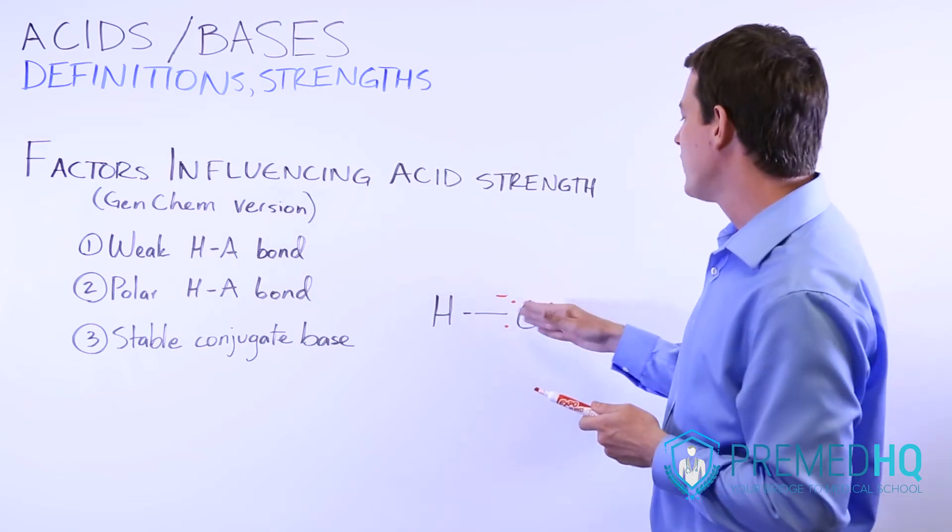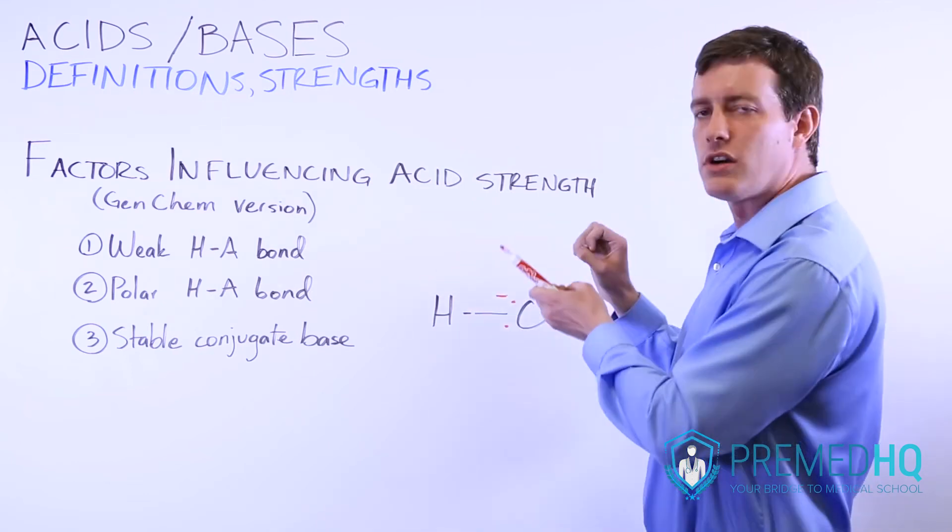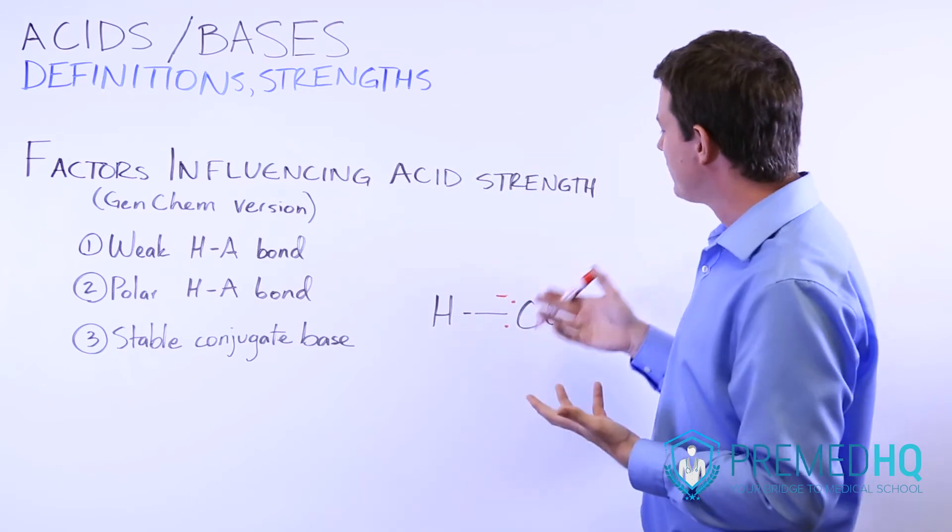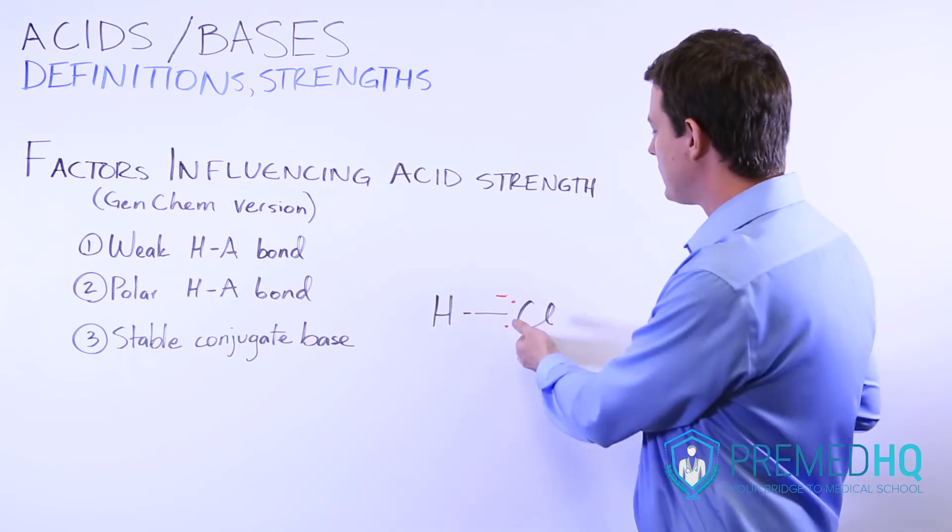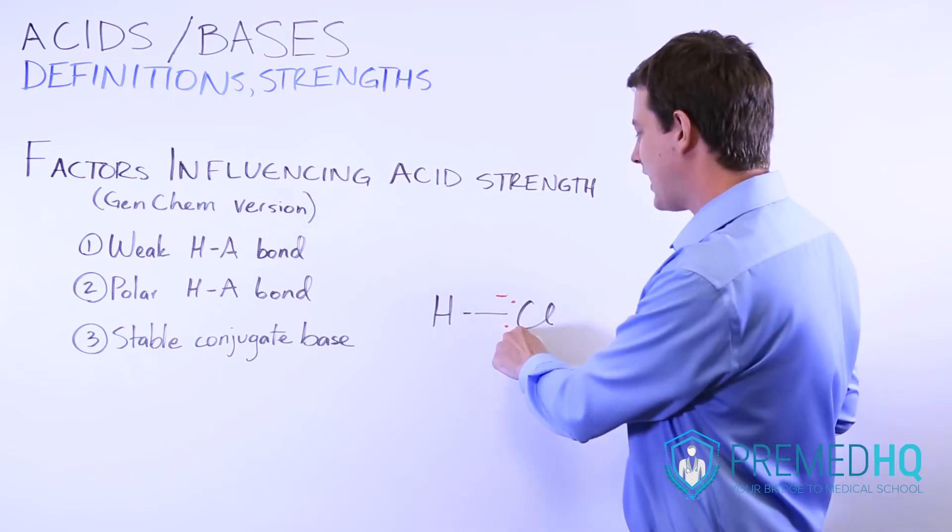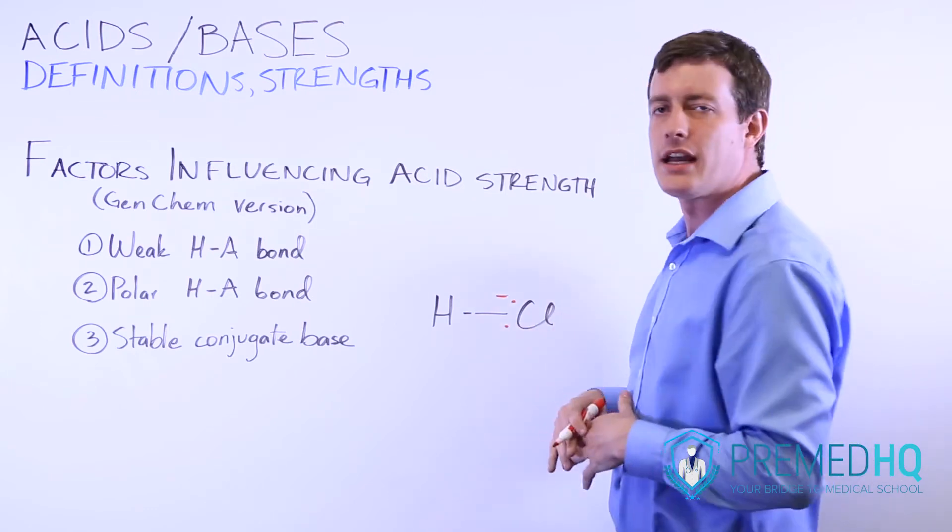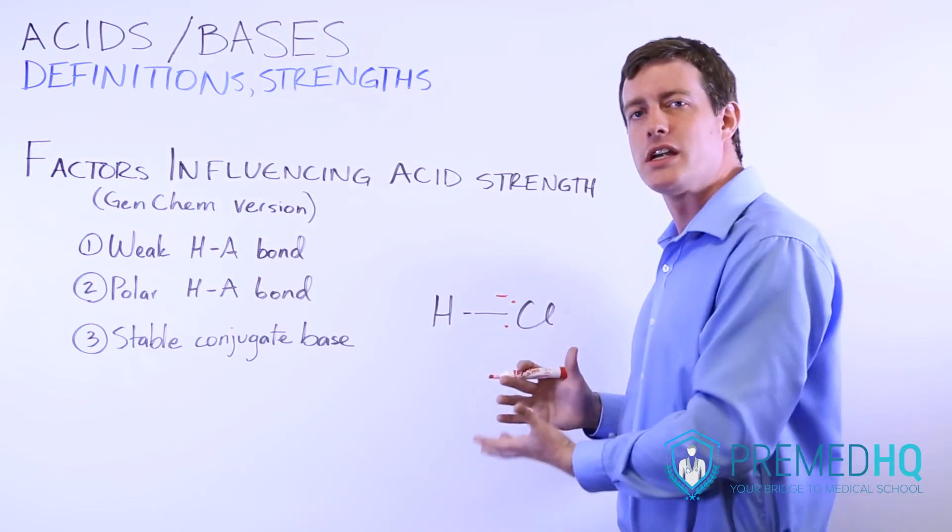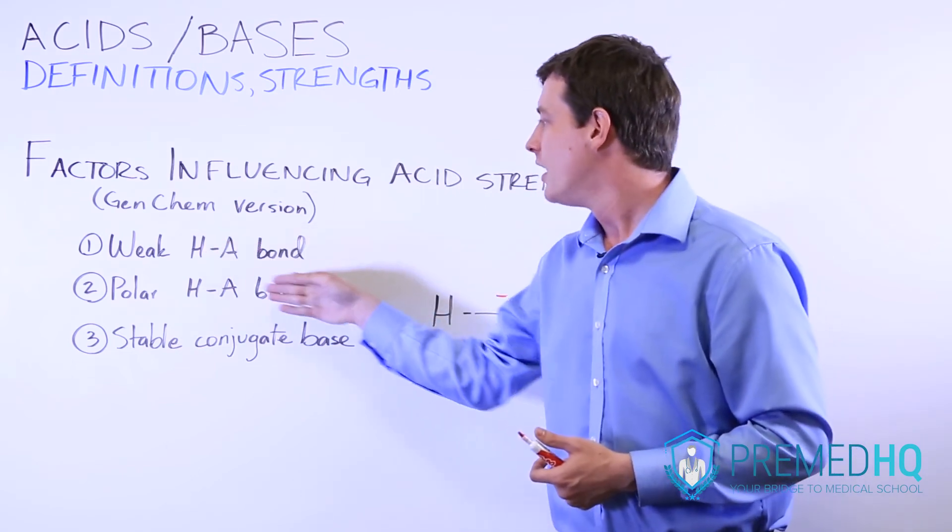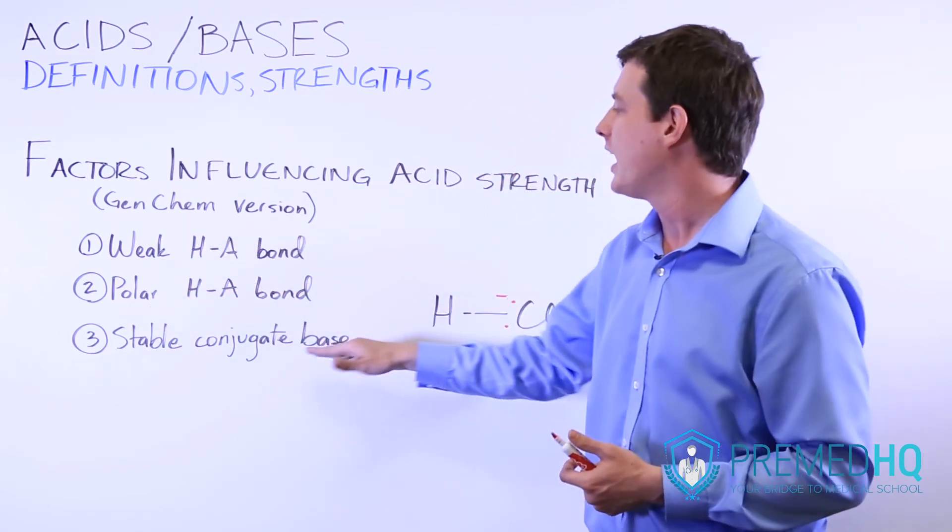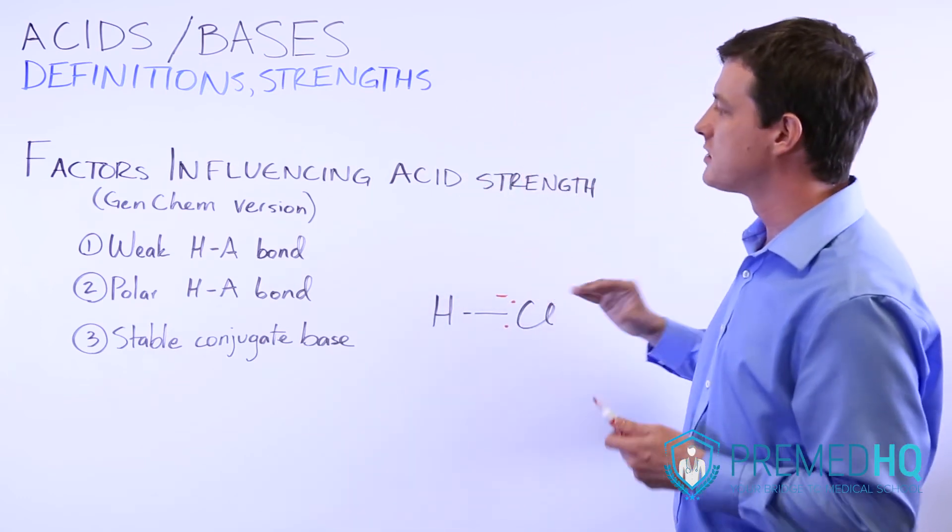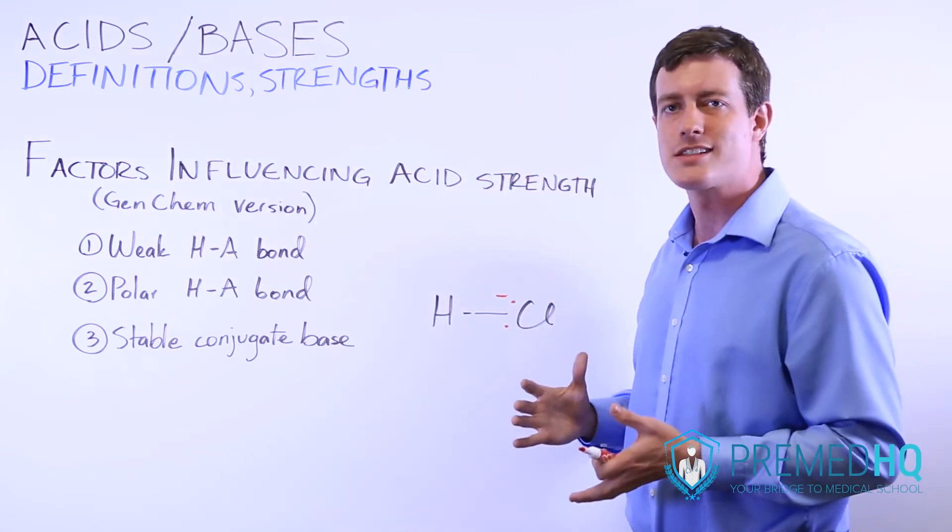Another thing to remember is that because Cl is a halogen, when it picks up that extra electron it ends up getting a complete octet and becoming very stable. So for general chemistry, recognize that having a weak H-A bond, a polar H-A bond, and a conjugate base that is very stable are all factors that increase the strength of an acid, and all of these are somewhat related to each other.